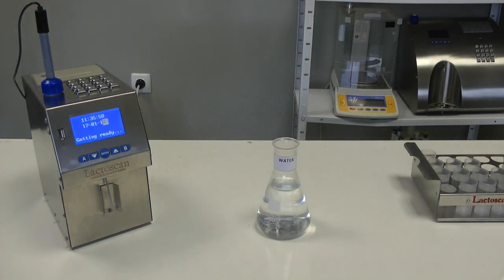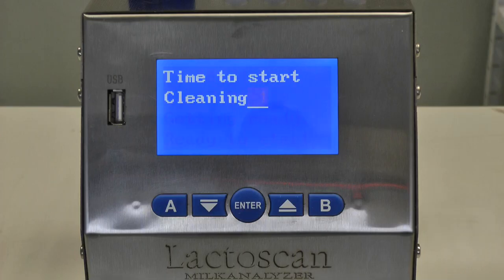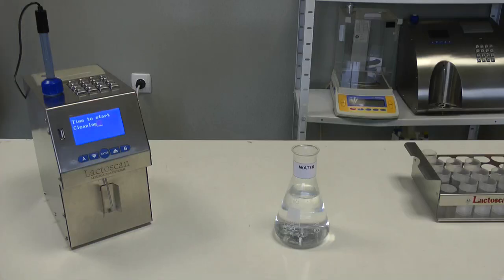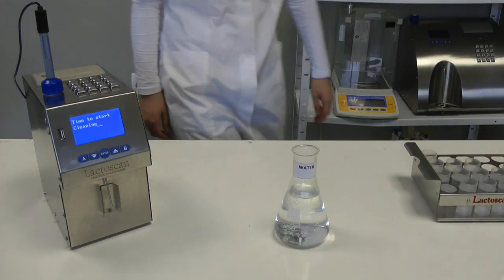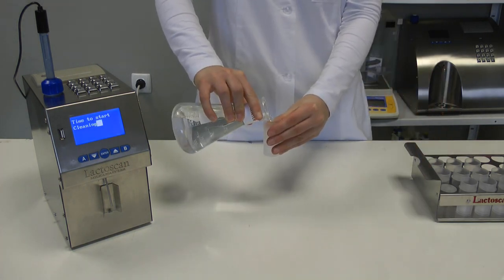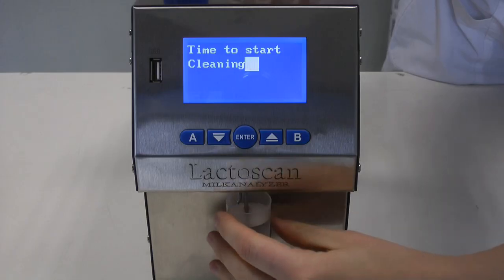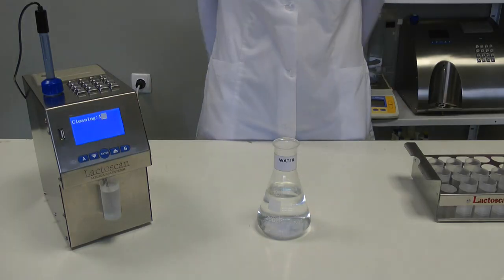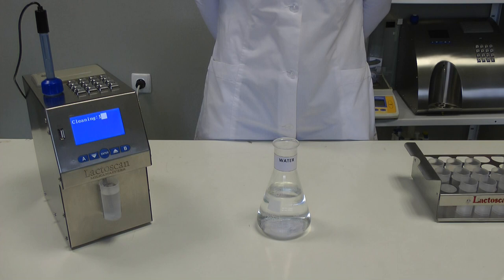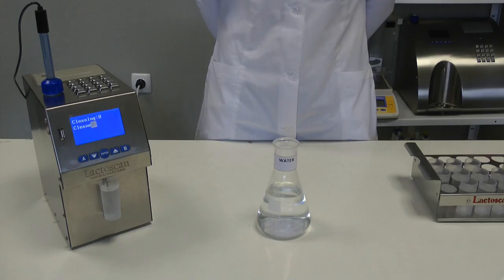55 minutes after switching on the power supply of the analyzer, but idle work, a sound signal is heard and the following message appears on the display: Time to start cleaning. Pour a mug with water. Press Enter to start the rinsing mode. The analyzer makes eight cycles and stops. Inscription cleaned appears on the display. Now the analyzer is again ready for work.